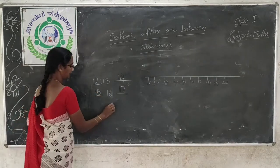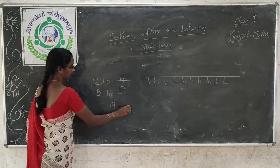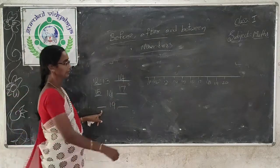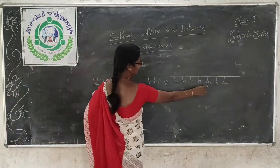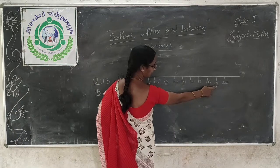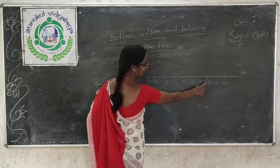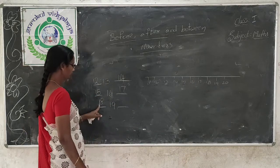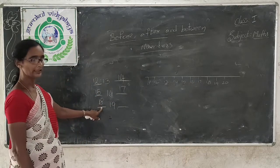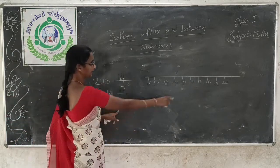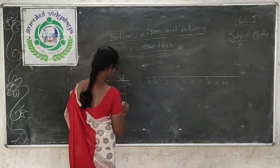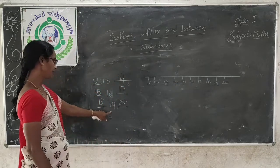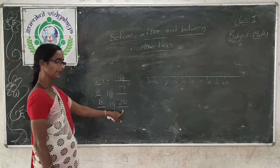Now 19. Which number comes before 19? 18. So 18 comes before 19. And after 19, 20 comes. So before 19 is 18 and after 19 is 20.